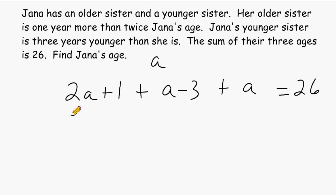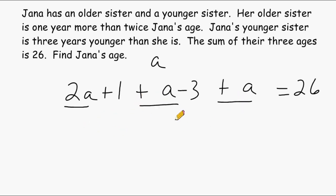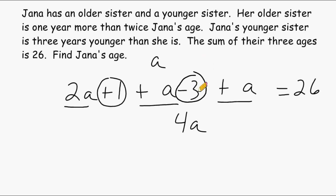First we simplify the left-hand side. We have an a term from each expression: 2a, 1a, and 1a — all positive — giving us 4a in total. Then we have two constants: a positive one and a minus three. Combining those gives a total of negative two, because the minuses win out, and we have two more minuses than pluses. So our equation is 4a minus two equals twenty-six.